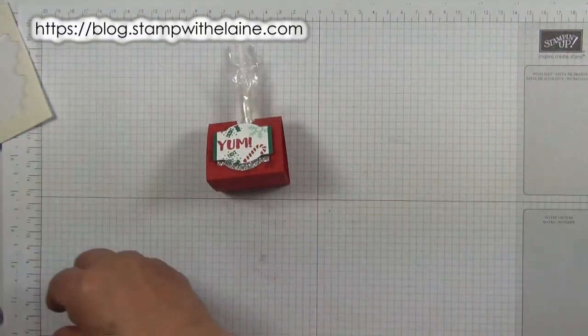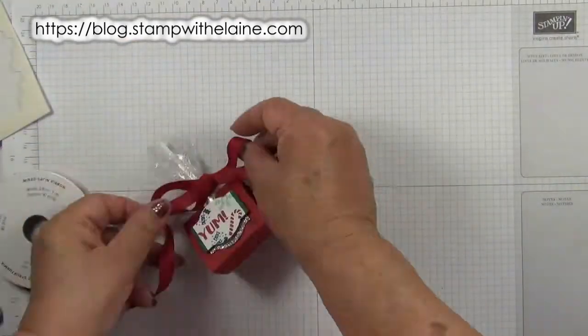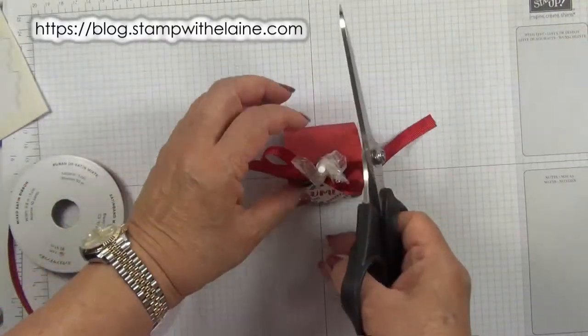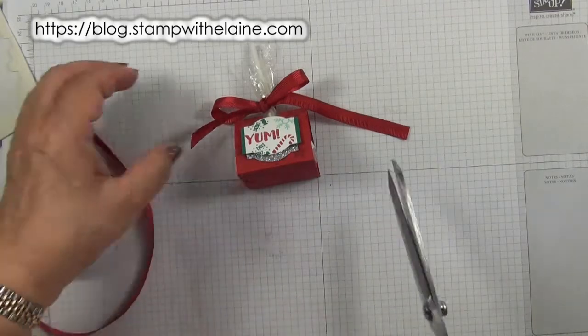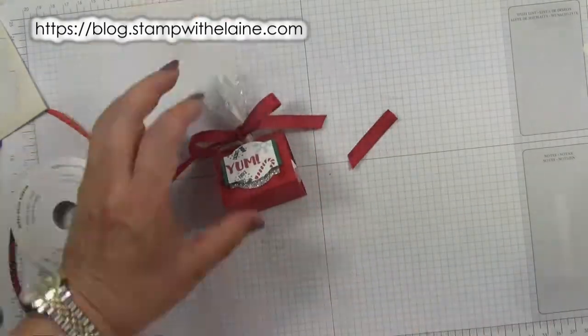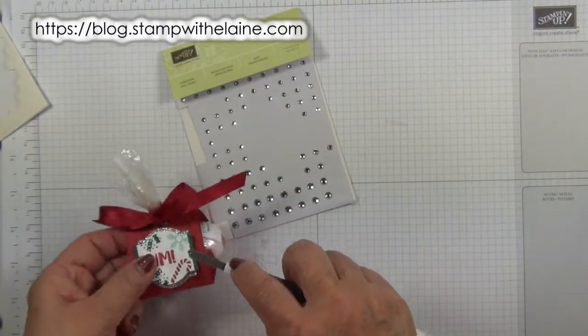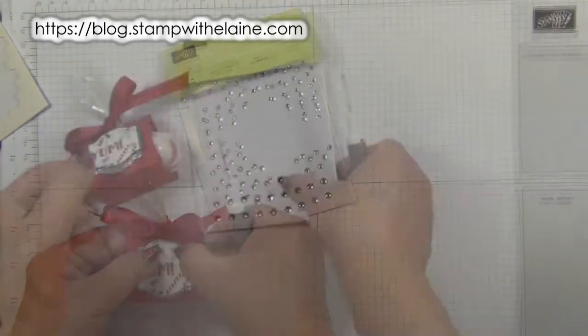Last thing to do is a piece of ribbon. Then just tidy it up, snip a bit off, and to finish you can just pop a rhinestone on there.